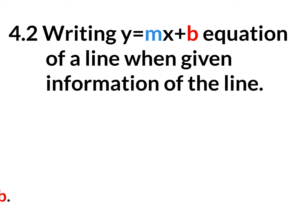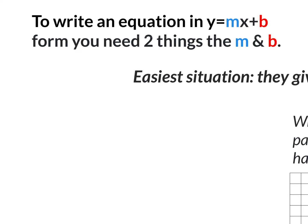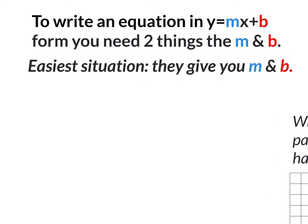Today, we're not really going to be graphing. We're going to be taking information of a line and writing the equation in slope-intercept form. To write an equation in slope-intercept form, y equals mx plus b, you need two things — the m and the b. So if you know the m and you know the b, you'll be able to write your equation in y equals mx plus b form. The easiest situation is when they give you the m and when they give you the b.